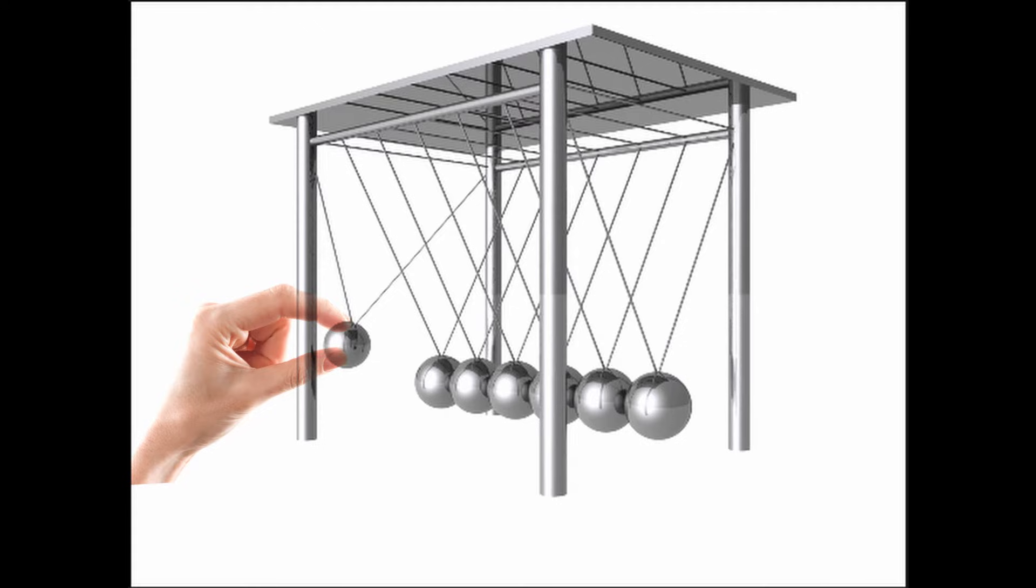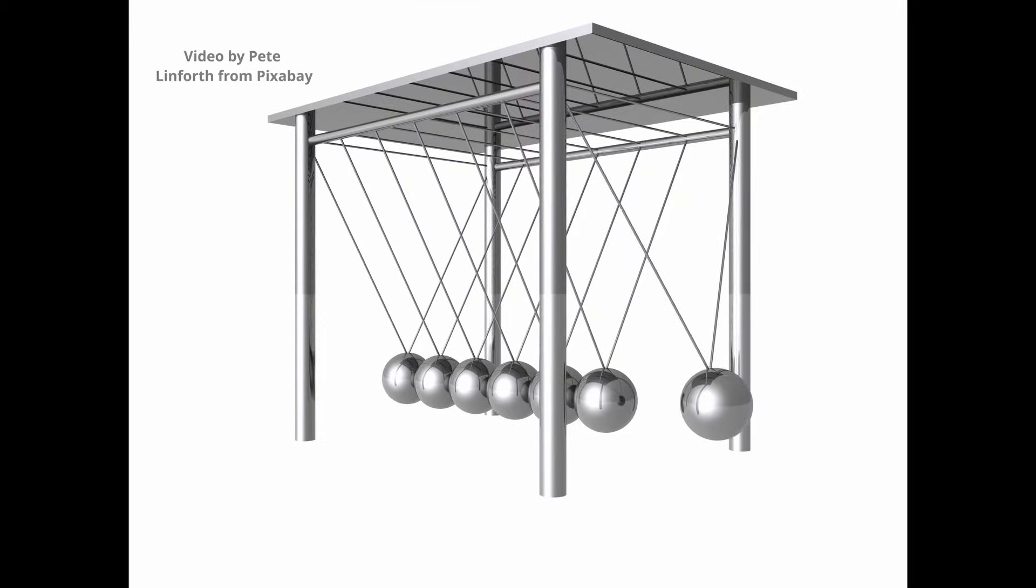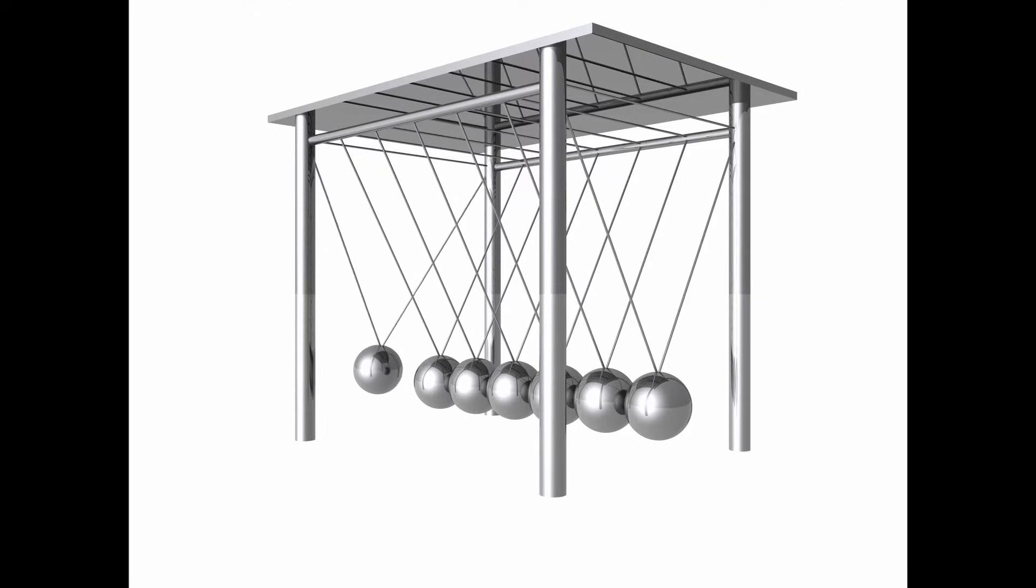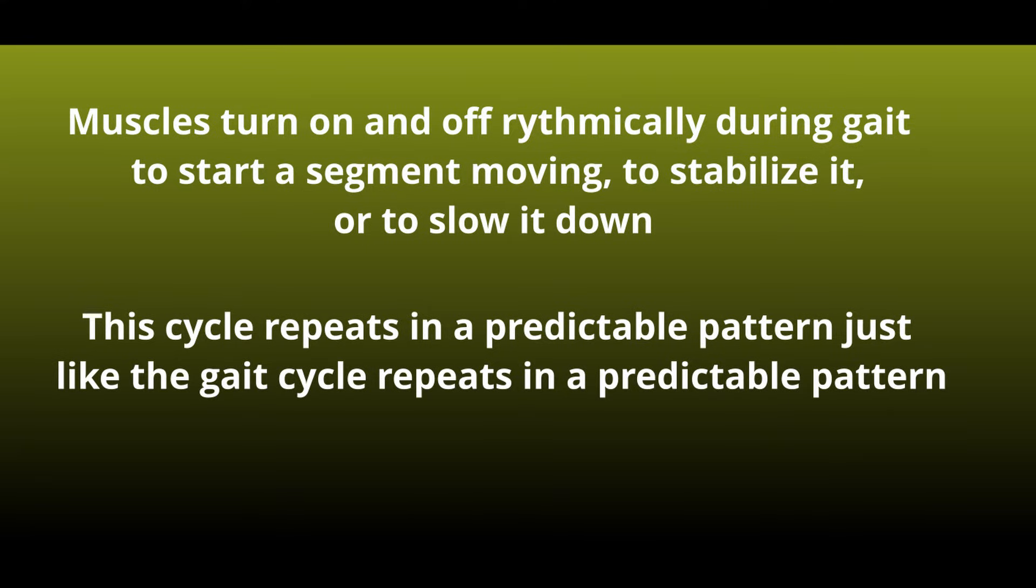One of the reasons our gait pattern is so efficient is because once we get a segment moving, it requires much less energy to keep it moving. So what we have is a repeatable pattern where muscles turn themselves on and turn themselves off. Let's examine this muscle activity in a little more detail.